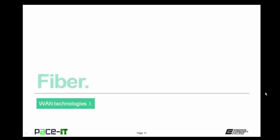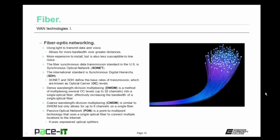Now let's conclude with fiber. Fiber optic networking uses light to transmit data and voice, allowing for more bandwidth over greater distances. Fiber optic networking is more expensive to install but is also less susceptible to line noise. The fiber synchronous data transmission standard in the United States is called the Synchronous Optical Network, or SONET standard. The international standard is called the Synchronous Digital Hierarchy, or SDH. Both SONET and SDH define the base rates of transmission over fiber optic cabling, known as optical carrier levels.